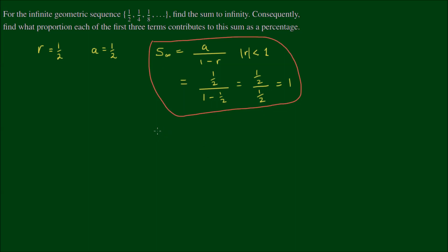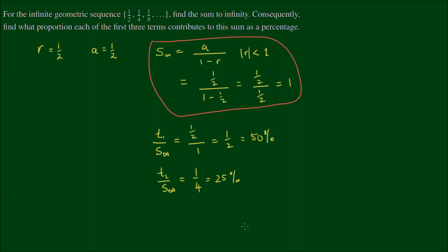The second part is to find what contribution each term makes to the sum. For t1: t1 over the infinite sum equals one-half over 1, which equals one-half — a 50% contribution. For t2: t2 over the sum equals one-quarter, which is 25% of the contribution. For t3: t3 over the sum equals one-eighth, and that's 12.5% of the contribution.